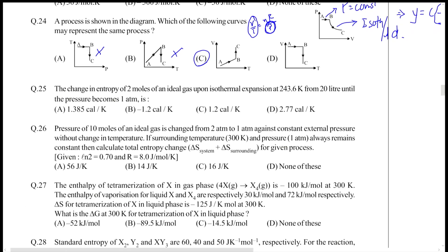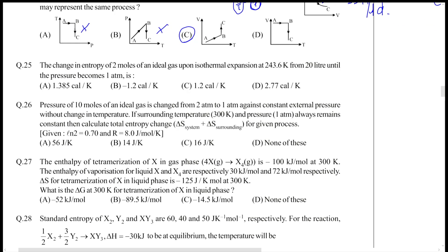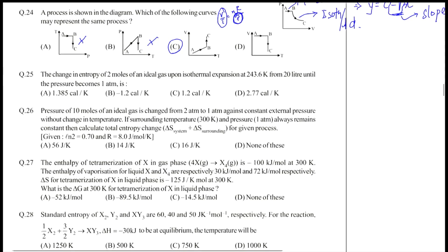The next doubt you have is question 25: the change in entropy. We have two moles of an ideal gas—n is given to us—upon isothermal expansion. Temperature remains constant and that value is also known. This is the initial volume, which is 20 liters, unless the pressure becomes 180.